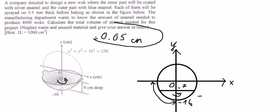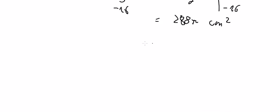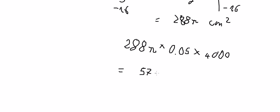So we use this number and multiply by 4000. We got the total volume, which should be about 57,600 pi cubic centimeters.